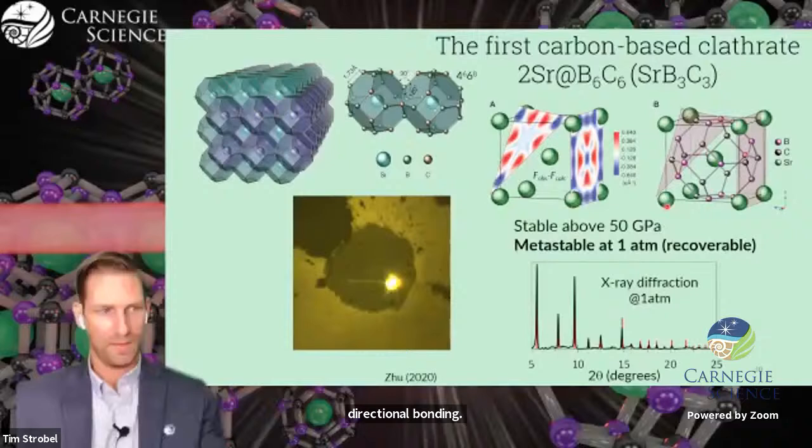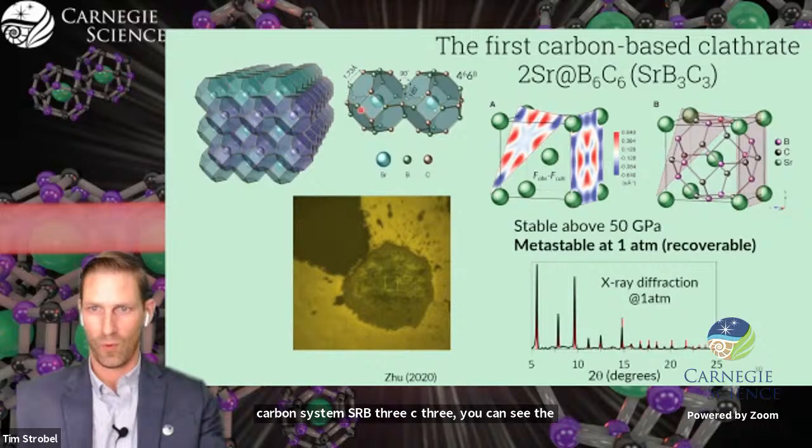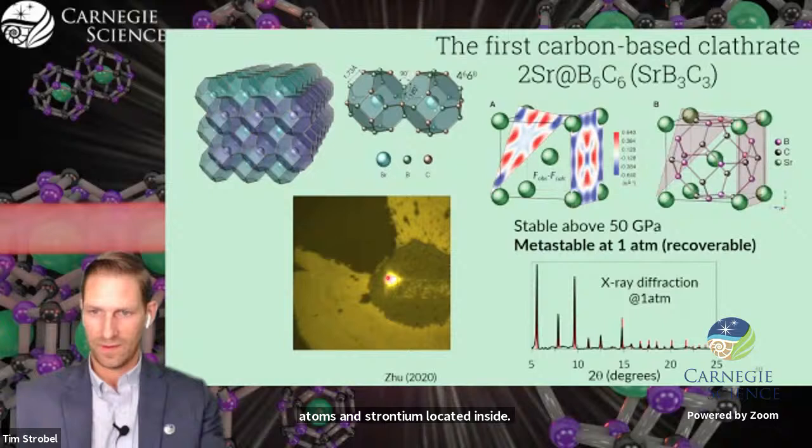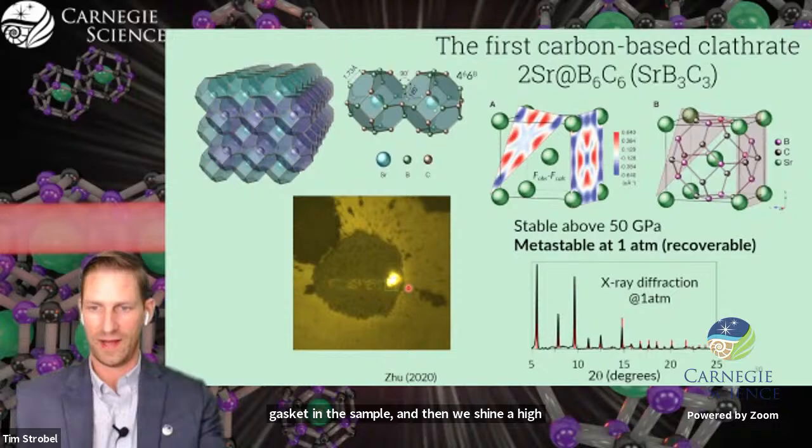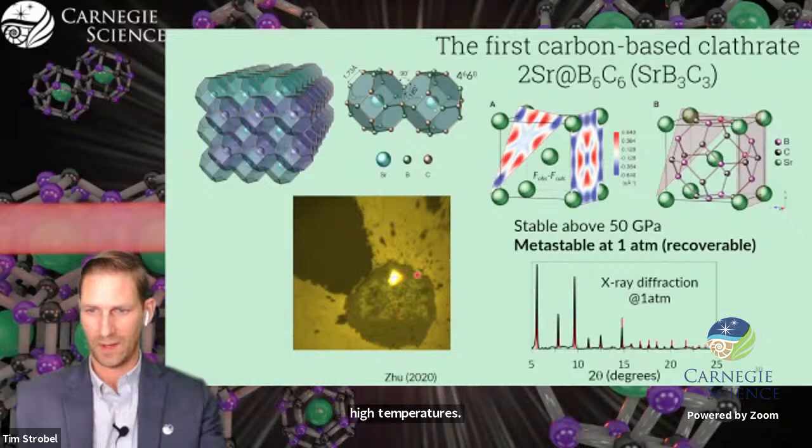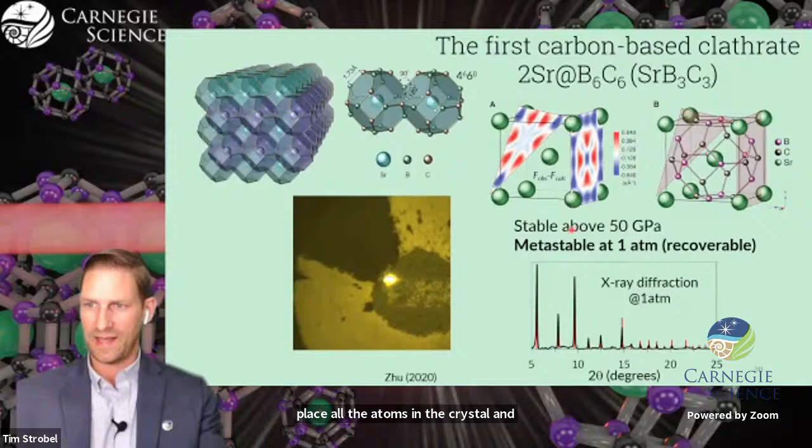Last year, we published the first discovery of a carbon boron clathrate structure in strontium boron carbon system, SRB3C3. You can see the cage stacking right here with alternating boron, carbon atoms, and strontium located inside. This is an actual animation of the synthesis, which we put inside the diamond anvil cell. We shine a high-temperature laser which couples to the sample. We can synthesize the material. The clathrate phase becomes shiny and metallic once it's synthesized.